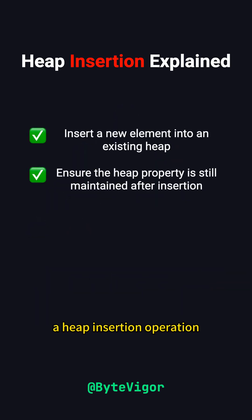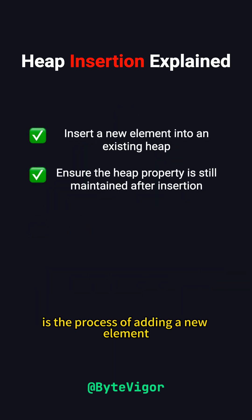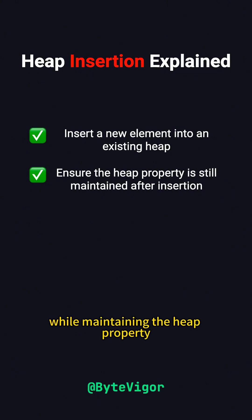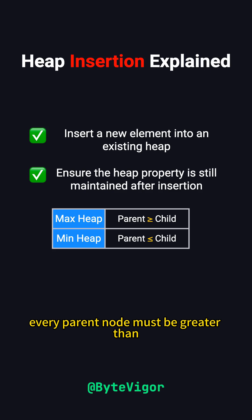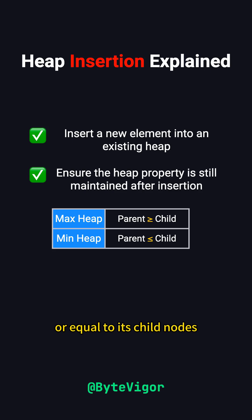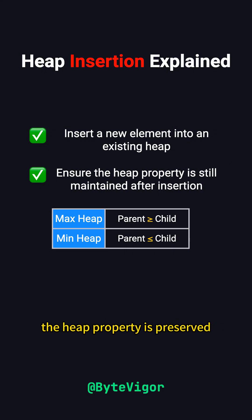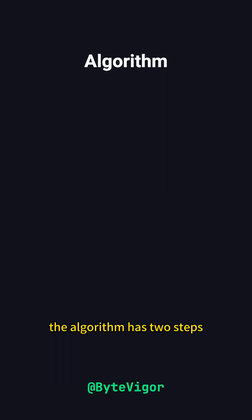A heap insertion operation is the process of adding a new element to an existing heap while maintaining the heap property. For example, in a max heap, every parent node must be greater than or equal to its child nodes. The insertion ensures that even after adding a new element, the heap property is preserved. The algorithm has two steps.